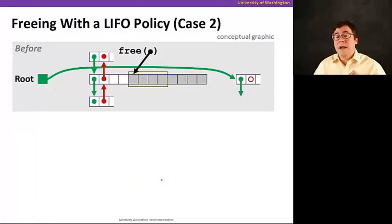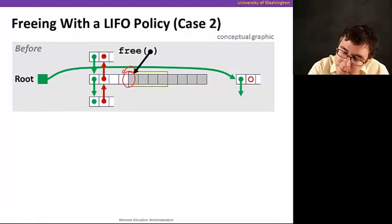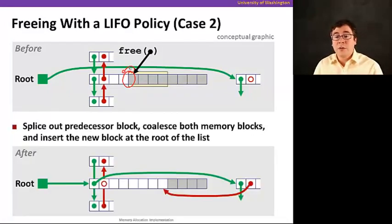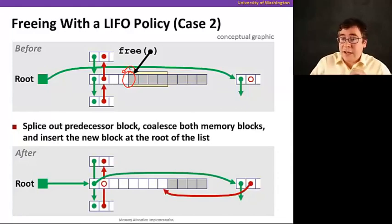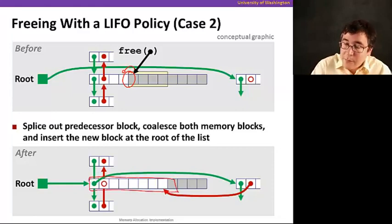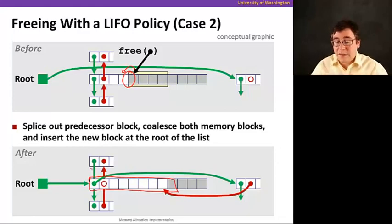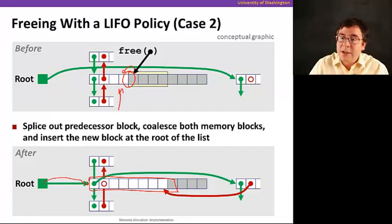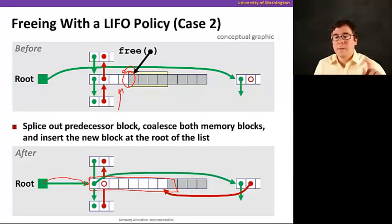The second case is when we're freeing a block and right before it there's already a free block. We're going to merge them together. The resulting merged block is what gets inserted at the beginning of the list, so the root points to it. We took the old block and extended it with the one we just freed.